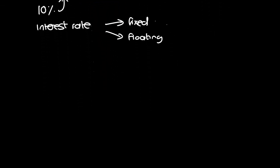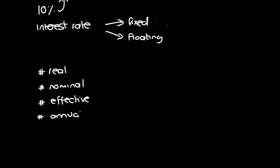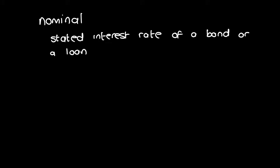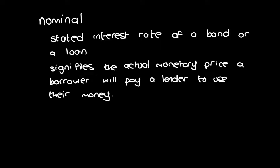There are also different kinds of interest rates, such as real, nominal, effective, and annual. Nominal interest is the stated interest rate of a bond or loan and it signifies the actual monetary price a borrower will pay a lender to use their money. So say you have a nominal interest rate of 6% — you can expect to pay 6 grand for every hundred grand loaned.